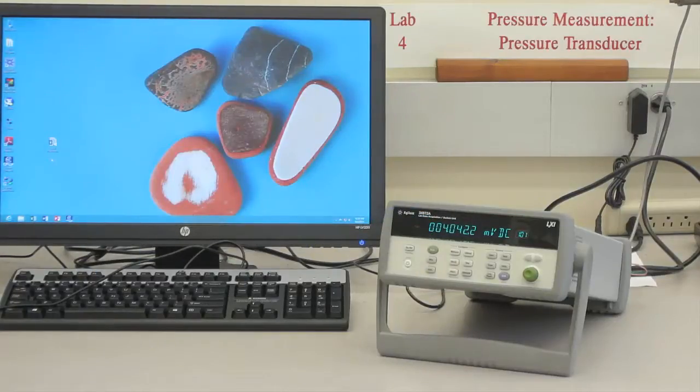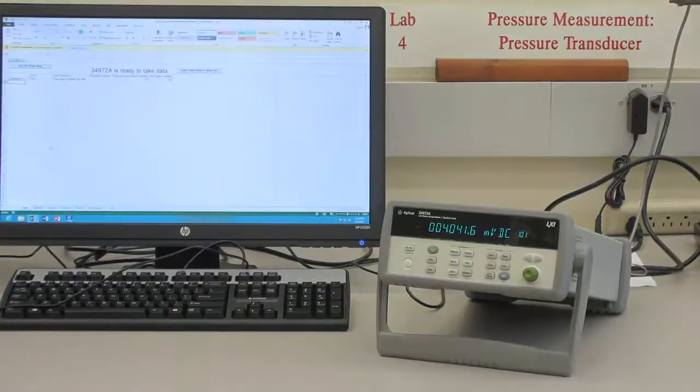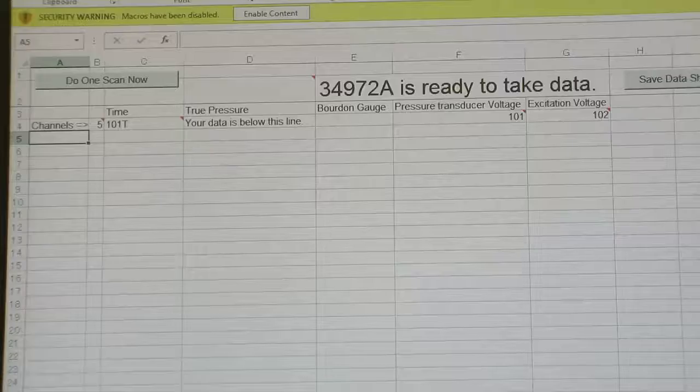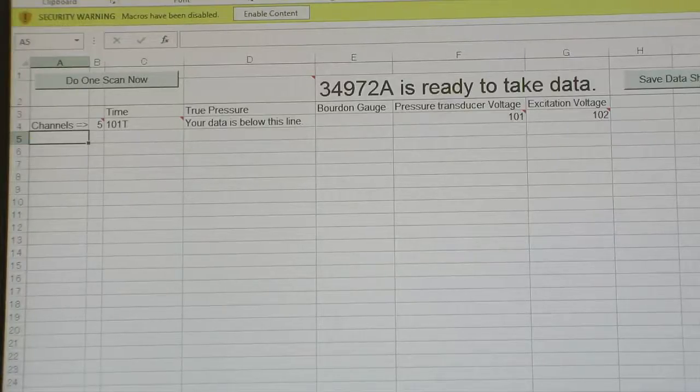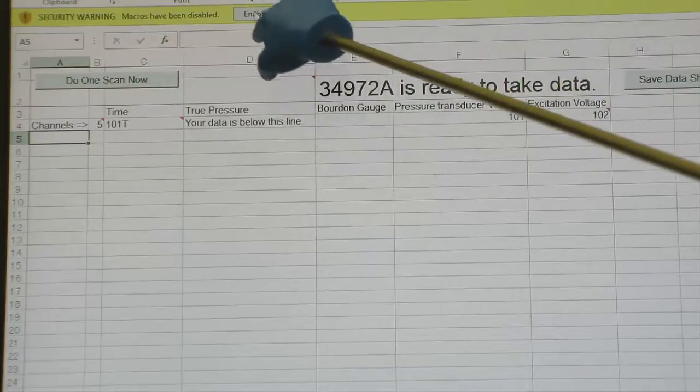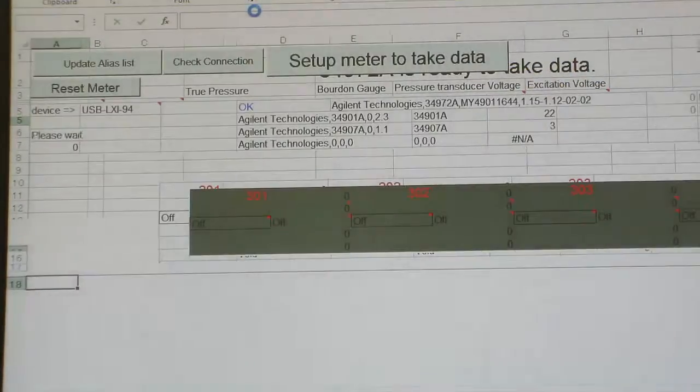Now, make sure the Agilent is on and the power supply is plugged in. Move to the computer and use the Excel spreadsheet titled Lab 4 Pressure Calibration Agilent version 1.1. When it opens, make sure to enable the macros.